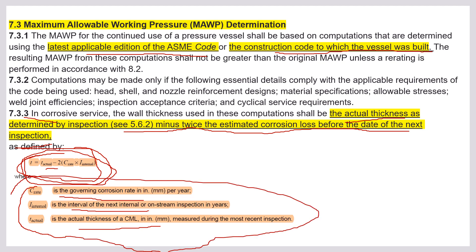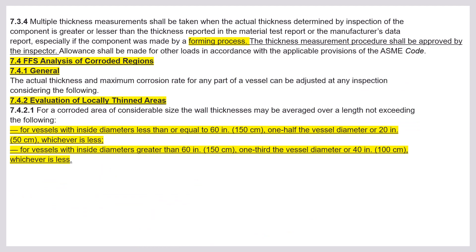Multiple thickness measurements shall be taken when the actual thickness determined by inspection is greater or lesser than the thickness reported in the material test report — especially if the component was made from a forming process. In a forming process such as rolling or pressing, the thickness will vary and may not come out uniform. The thickness measurement procedure shall be approved by the inspector, and allowance shall be made for other loads in accordance with applicable ASME code provisions and FFS analysis for corroded regions.